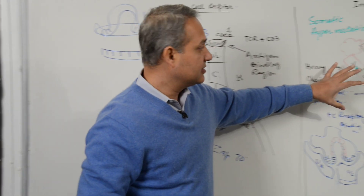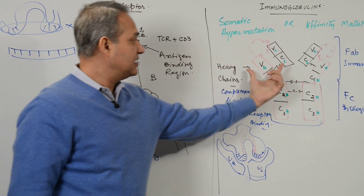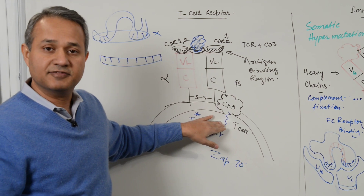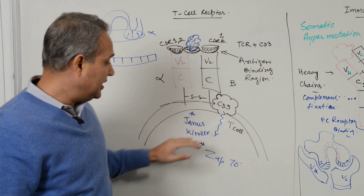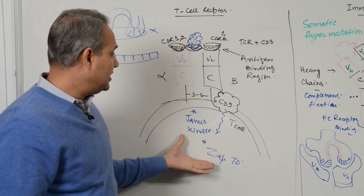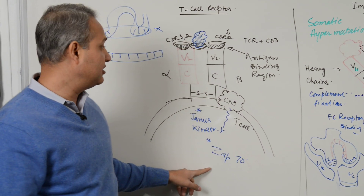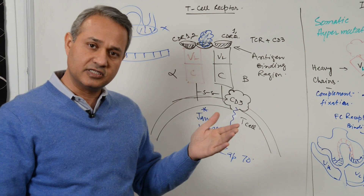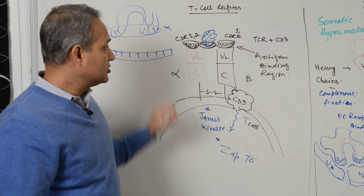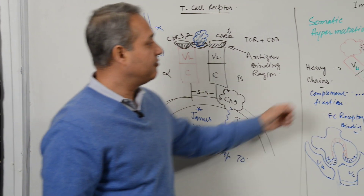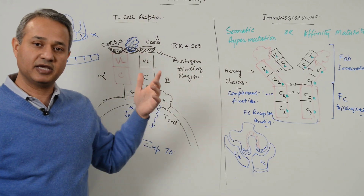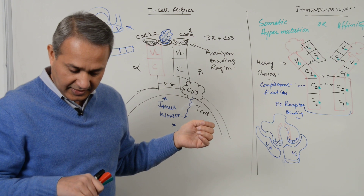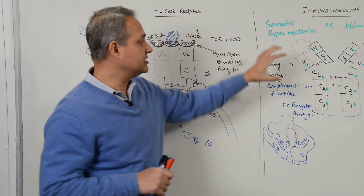To recap: the FAB region of immunoglobulin is similar to the T cell receptor; the T cell receptor works in combination with CD3; CD3 acts as a signal transducer working with Janus kinase and ZAP70. CD3 defect, Janus kinase defect, or ZAP70 defect can cause SCID, as can interleukin-2 defects. Next we will talk about the formation of the variable regions.